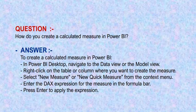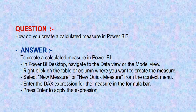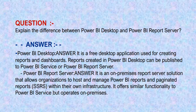The question is, how do you create a calculated measure in Power BI? To create a calculated measure in Power BI, in Power BI Desktop, navigate to the data view or the model view. Right-click on the table or column where you want to create the measure. Select new measure or new quick measure from the context menu. Enter the DAX expression for the measure in the formula bar, then press Enter to apply the expression.